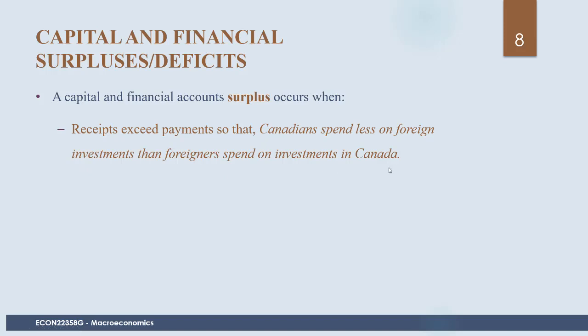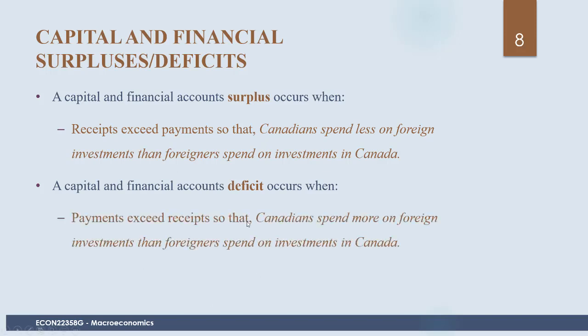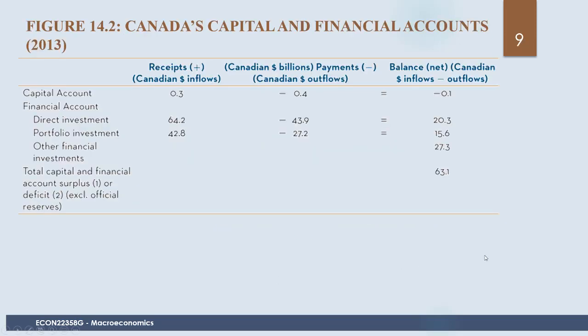If more people invest in Canada than we invest abroad, there is more money coming in — a surplus. A capital and financial accounts deficit occurs when payments exceed receipts, meaning Canadians spend more on foreign investments than foreigners spent on investments in Canada. We should expect that if we have a negative current account — meaning we bought more from the rest of the world than they bought from us — we would need to borrow money from abroad.